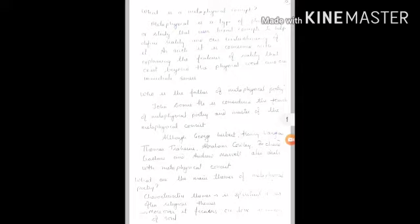I have told that the father of metaphysical poetry, who is the famous poet known as the father of metaphysical poetry? Yes, John Donne. He is considered the founder of metaphysical poetry and master of the metaphysical conceit. Although George Herbert, Henry Vaughan, Thomas Traherne, Abraham Cowley, Richard Crashaw, and Andrew Marvell also deal with metaphysical conceit and metaphysical poetry.